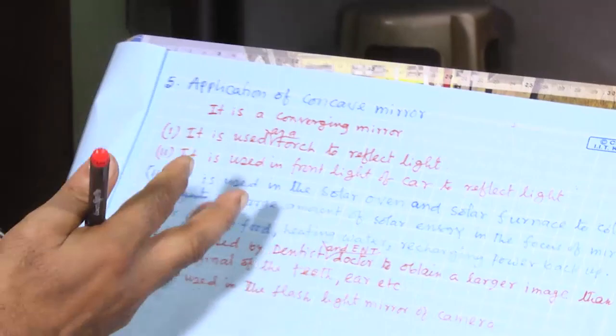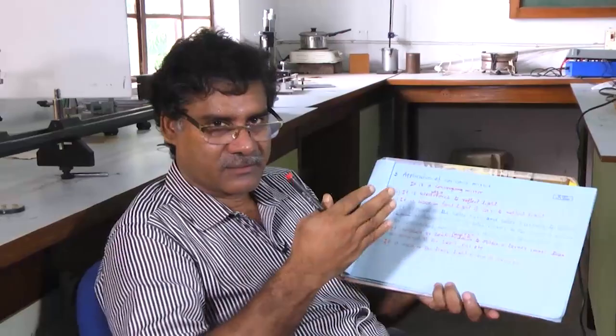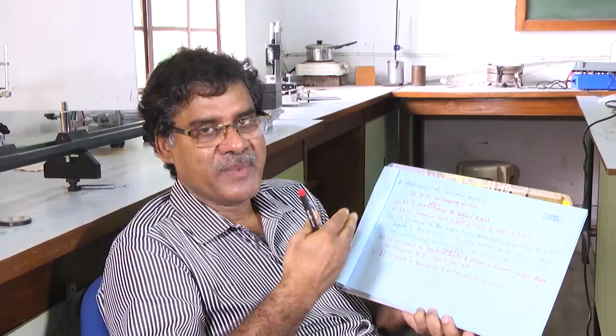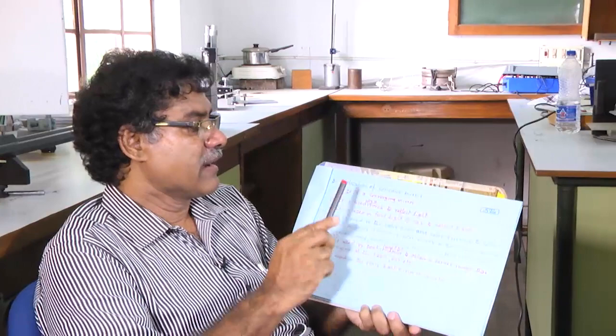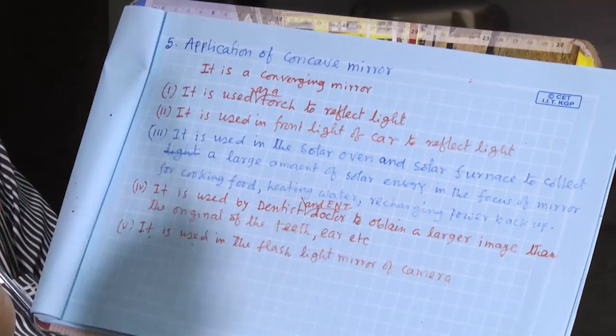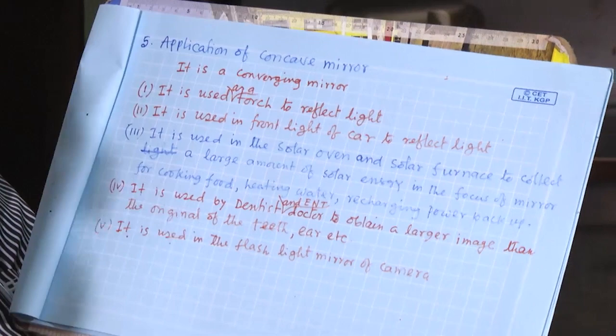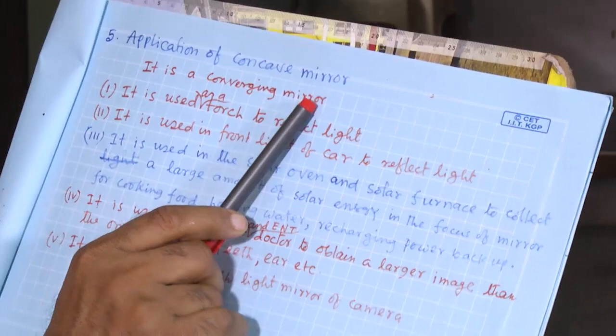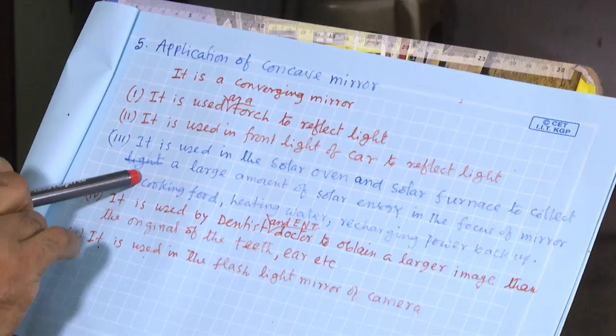So far I discussed applications of lenses. There are many applications but I discussed a few frequently used ones. Now let me briefly mention applications of mirrors. The application of the concave mirror — the concave mirror is basically a converging mirror, equivalent to the convex lens. It is used for converging rays.